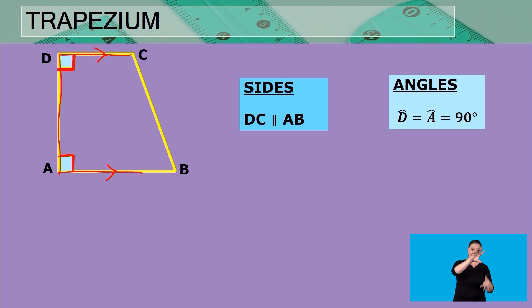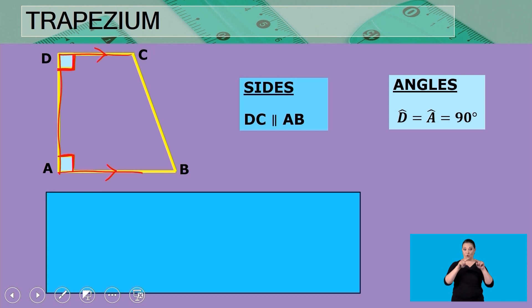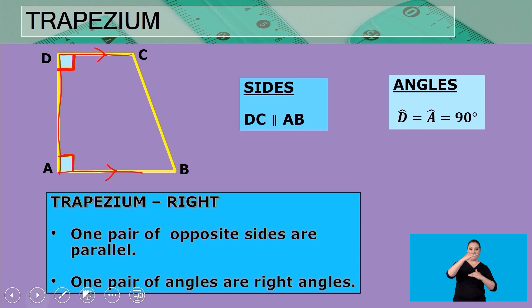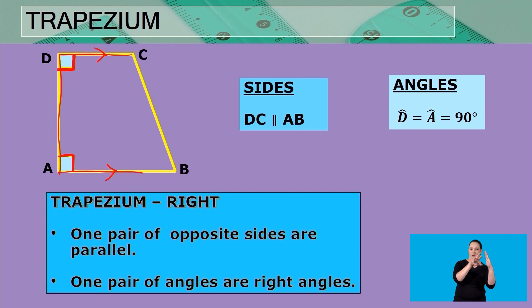For a right trapezium: one pair of opposite sides are parallel, and one pair of angles are right angles. That covers all our quadrilaterals. I really hope you enjoyed this lesson. Thank you for joining us and we hope to see you next time. Goodbye!